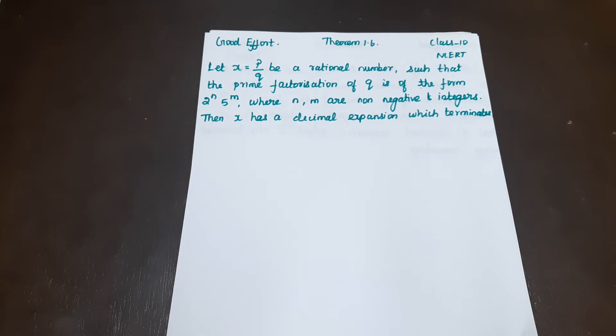So here, the rational number is in p/q form. And if q has the form 2 raised to the power n, 5 raised to the power m, then the decimal expansion will terminate. That is what Theorem 1.6 states.